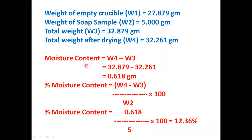Therefore, the moisture content present in the soap sample is W4 minus W3, meaning the weight of soap sample before drying minus the weight after drying. The difference is 0.618 grams. So the percentage moisture content is calculated as (W4 minus W3) divided by W2, multiplied by 100. That is 0.618 divided by 5 grams, into 100, giving 12.36 percent.